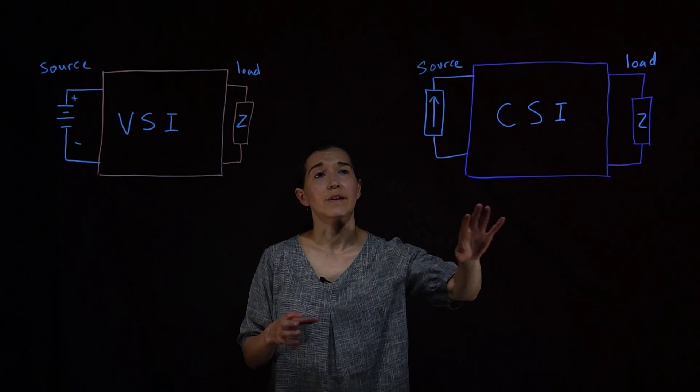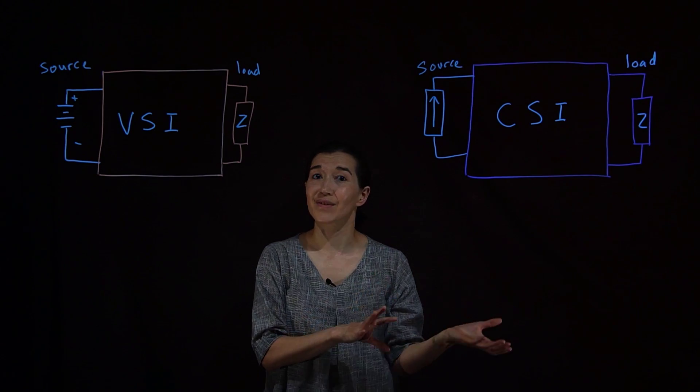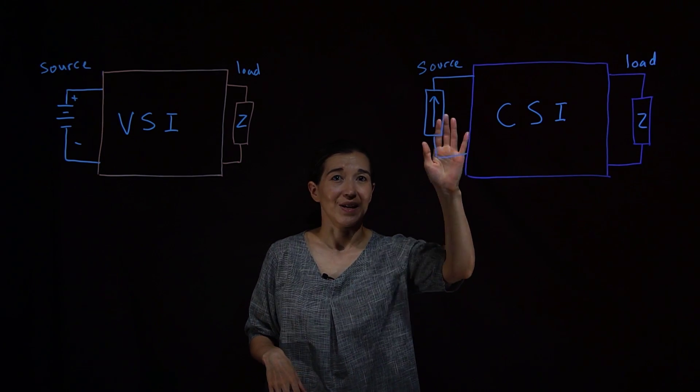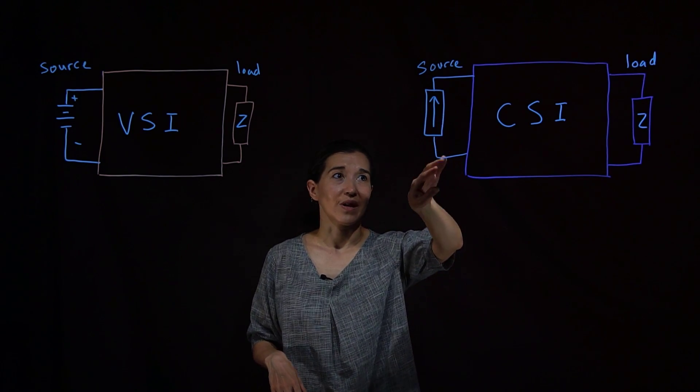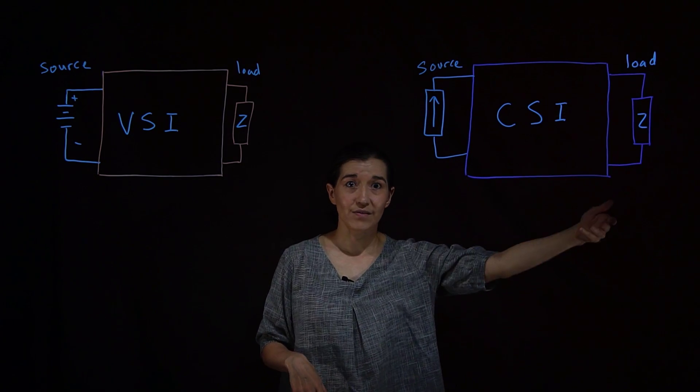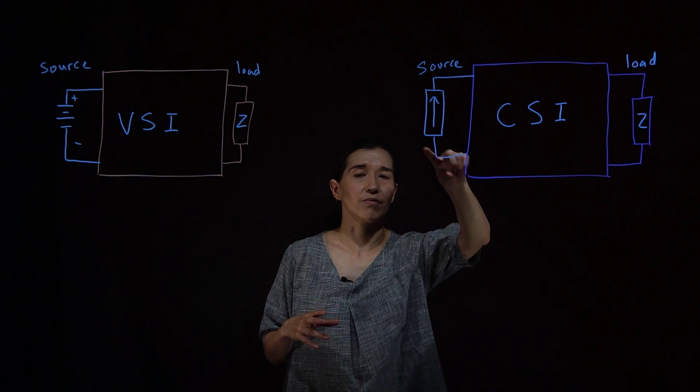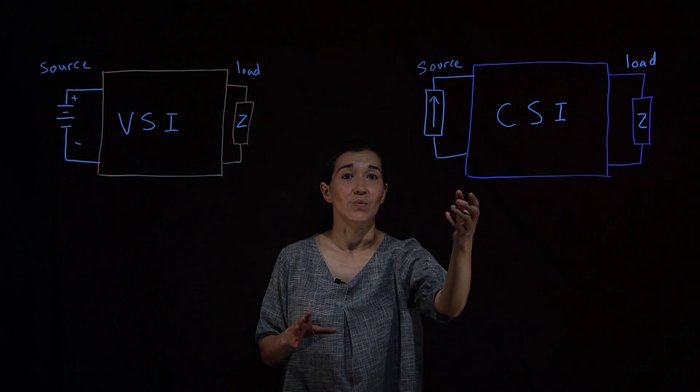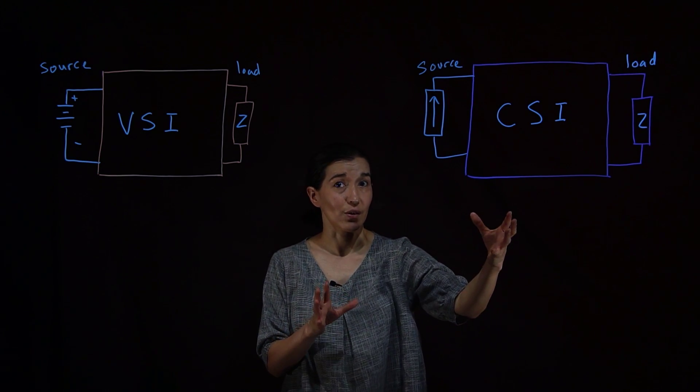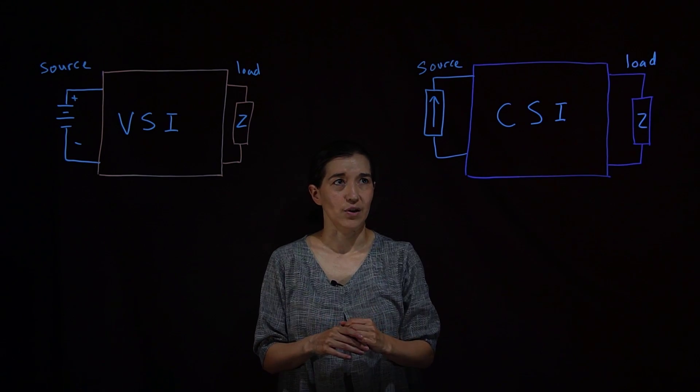Then the inverter itself also has a bunch of different switches in various topologies. But the idea is that it can take that source and put it into the load in a positive direction or the negative direction or sometimes zero. If the current is going to be circulating through the inverter during one of the modes then it wouldn't see any of the current on the output.